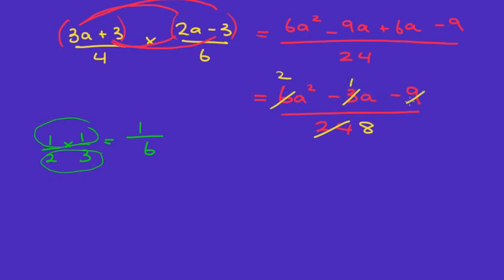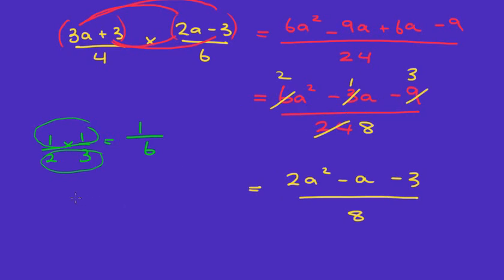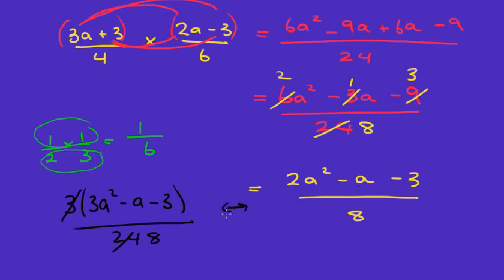We can simplify by recognizing that three goes into all three terms of the numerator and also into twenty-four. Three goes into twenty-four eight times, into six two times, into three once, and into nine three times. So our final answer is two a squared minus a minus three all over eight. Alternatively, factorize three out first to get three(2a² − a − 3) over twenty-four and cancel, giving the same result.